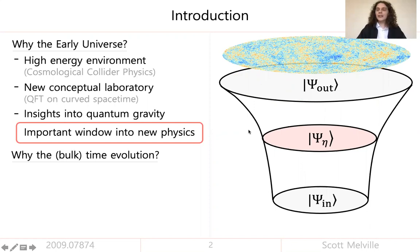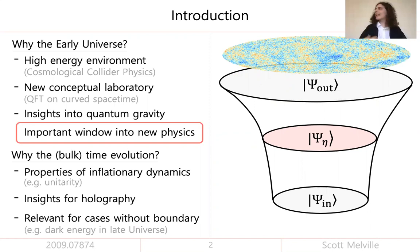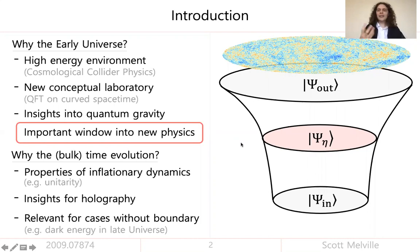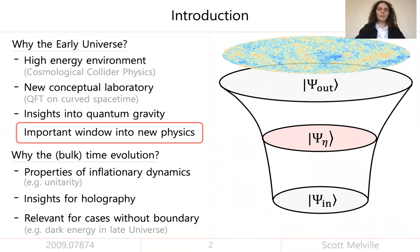There are a few answers, and they're mostly pragmatic. Firstly, there are some properties of the inflationary dynamics which are just much easier to see by looking at how the state evolves in time. A good example is unitarity, which is all about how probabilities are conserved in time. If you restrict your attention to the boundary, it's much harder to see what the imprint of that time evolution is. Also, if there were some de Sitter holographic prescription for reconstructing all of the bulk dynamics just from boundary observables, that would be great — unfortunately, at the moment I don't know how to do that. All I know how to do is solve the Schrödinger equation.